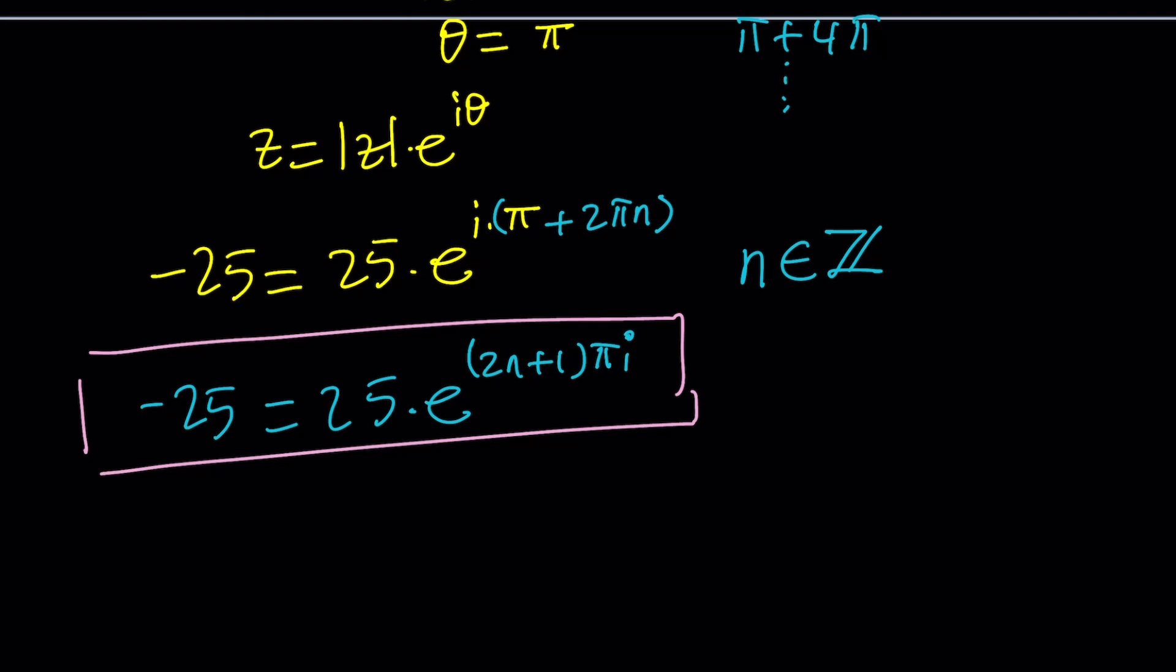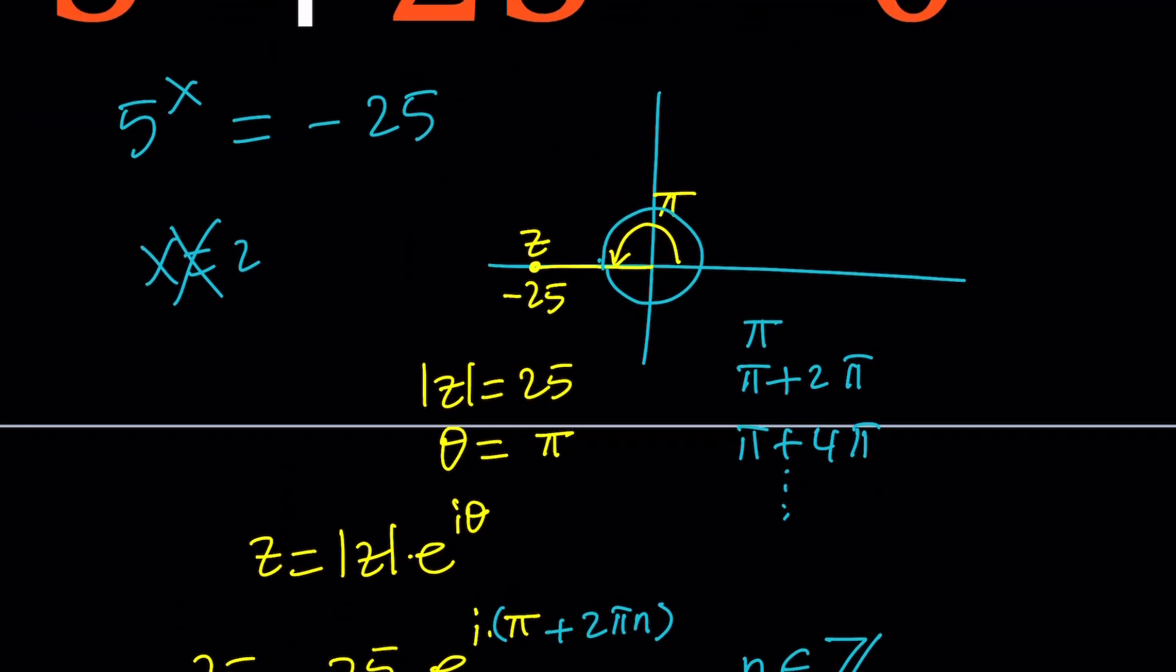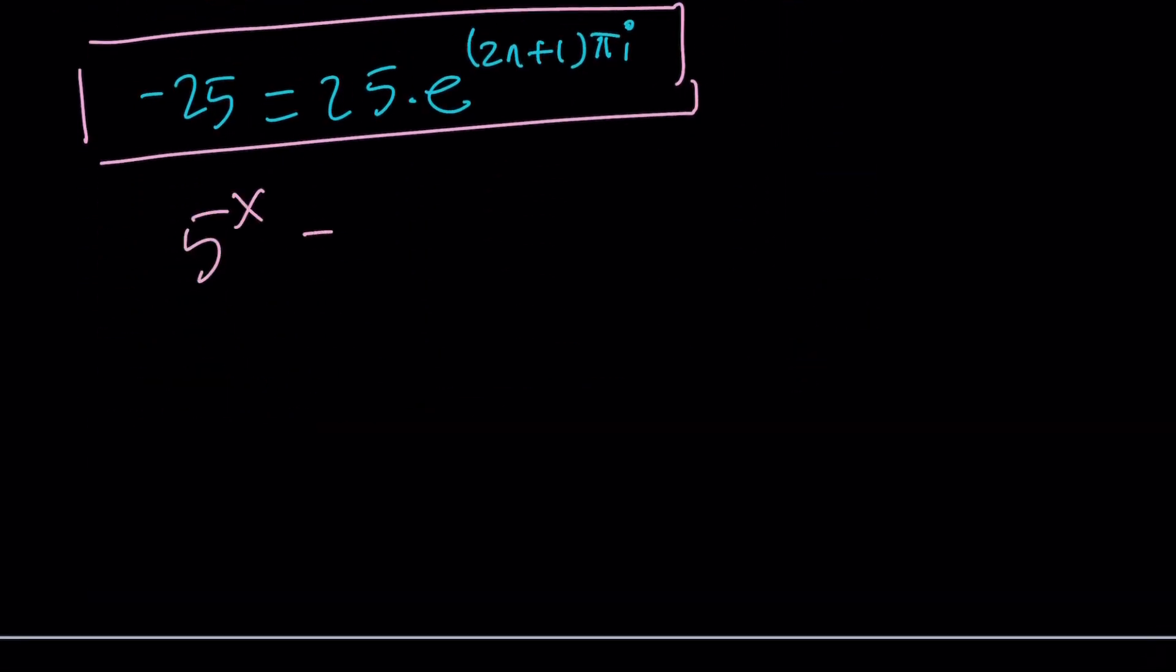Remember, I said that x equals 2 does not work, but there is something interesting about it, which we'll talk about at the end. Okay, now, what do you do with the 5? We have 5 to the x equals negative 25, so I complexified negative 25, but what about 5? Well, we can quickly write 5 as a power of e. Consider the identity a equals e to the power ln a, ln being the natural logarithm. So we can basically write the 5 to the power x as e to the power ln 5 to the power x.